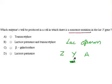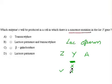That means somewhere in the Y gene a nonsense codon will be formed. So the Z gene will be transcribed normally. The Y gene, because a premature nonsense codon is formed, will not be fully transcribed. And the A gene, which comes after this stop codon, will also not be transcribed. That means only gene Z will get transcribed.